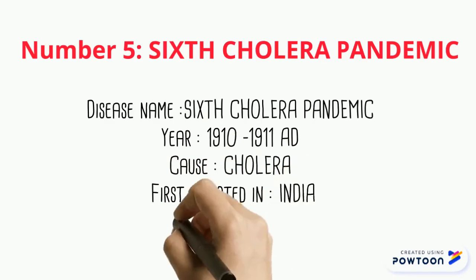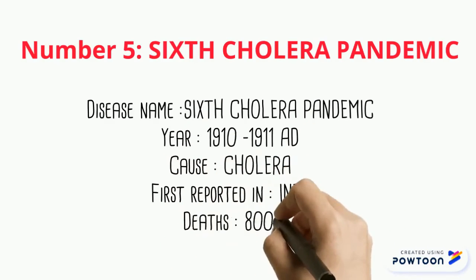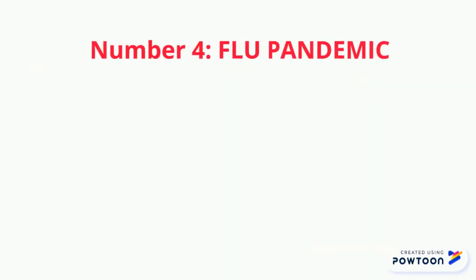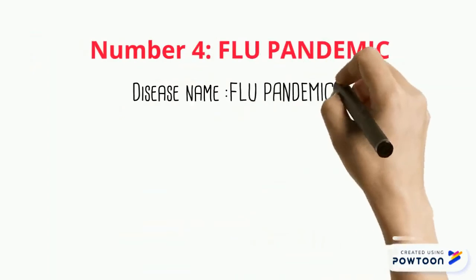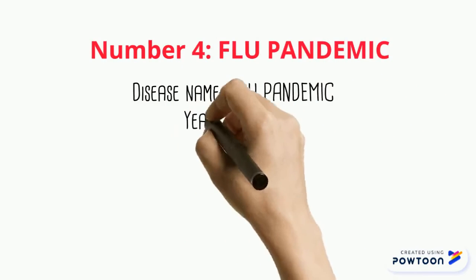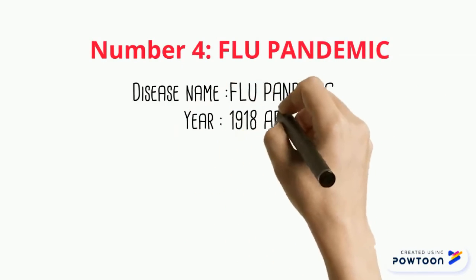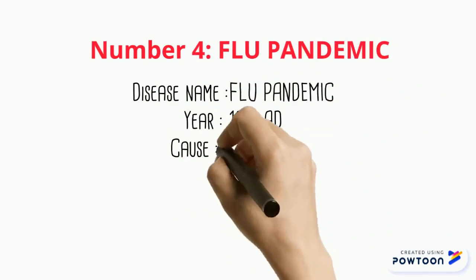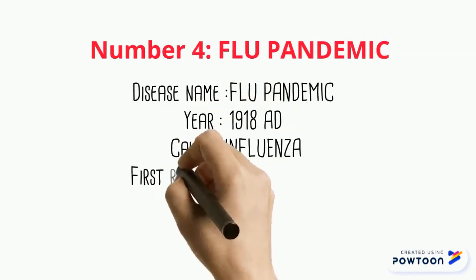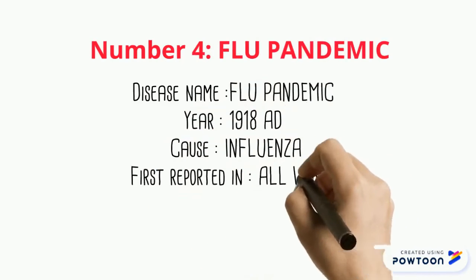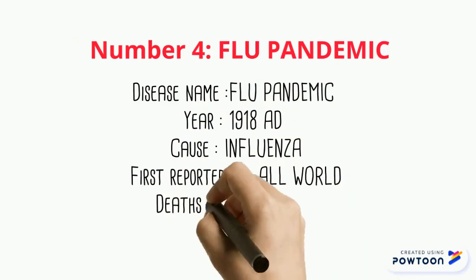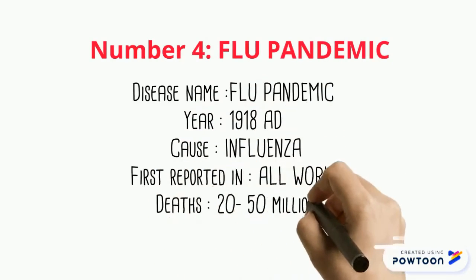Number 4 is the Global Flu Pandemic. Between 1918 and 1920, a disturbingly deadly outbreak of influenza spread across the globe, infecting over a third of the world's population and ending the lives of 20 to 50 million people.